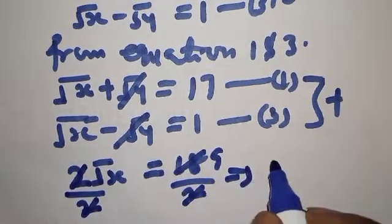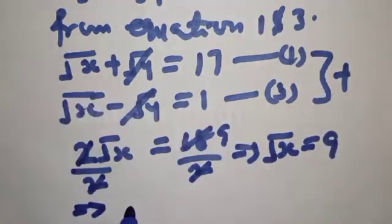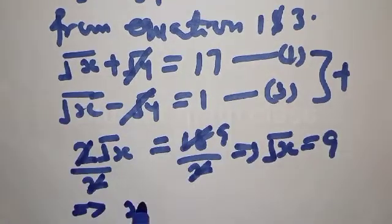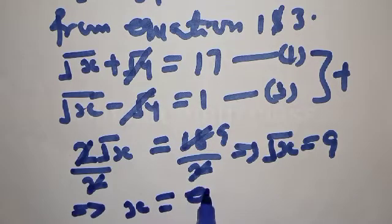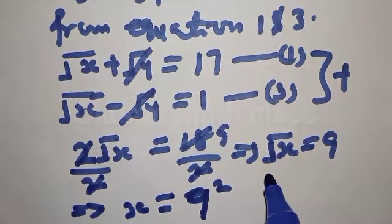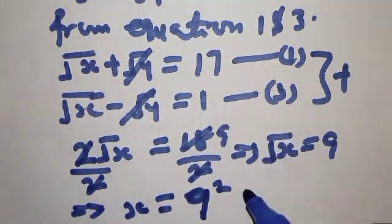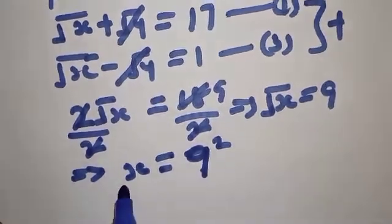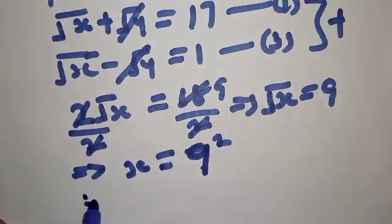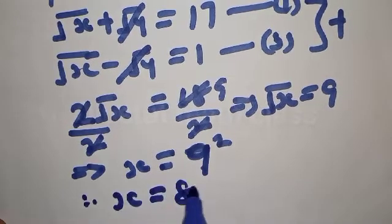This implies that square root of X equals 9. Squaring both sides, the square root cancels, so X equals 9 squared. Therefore X is equal to 81. We have now found the value of X by adding equations 1 and 3 together.